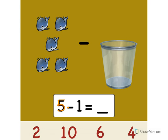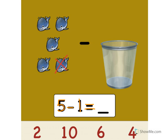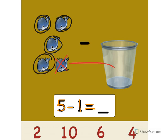5 minus 1 equals what? Let's take away 1. 1. One whale in the trash can. How many does that leave us with? Let's count. 1, 2, 3, 4. Point to the number 4. Good job. 5 minus 1 equals 4. Great.